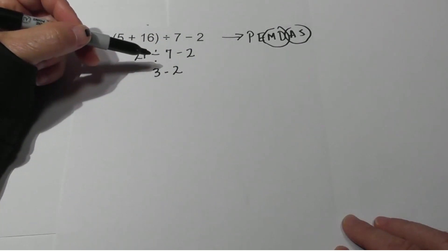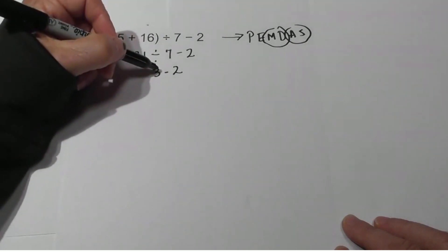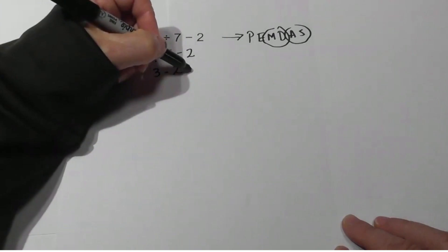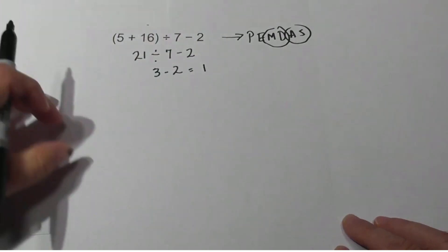No parentheses, no exponents, no multiplication or division, and so we do have subtraction. 3 minus 2 equals 1.